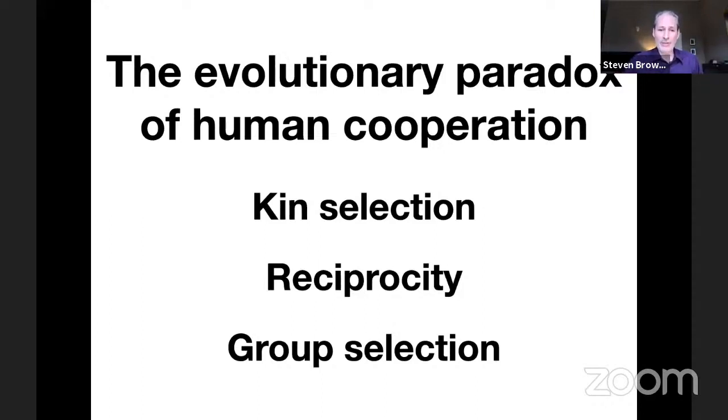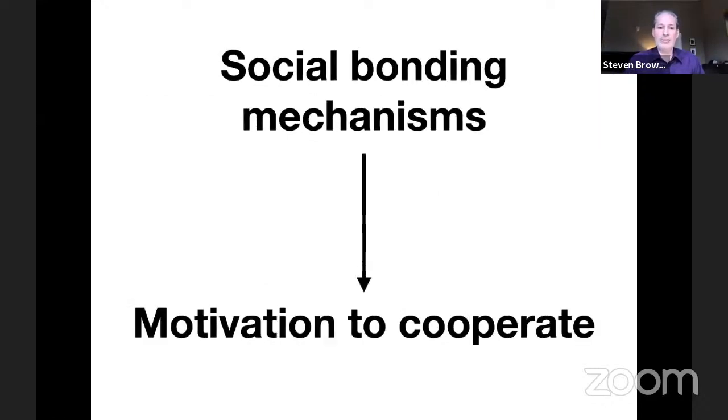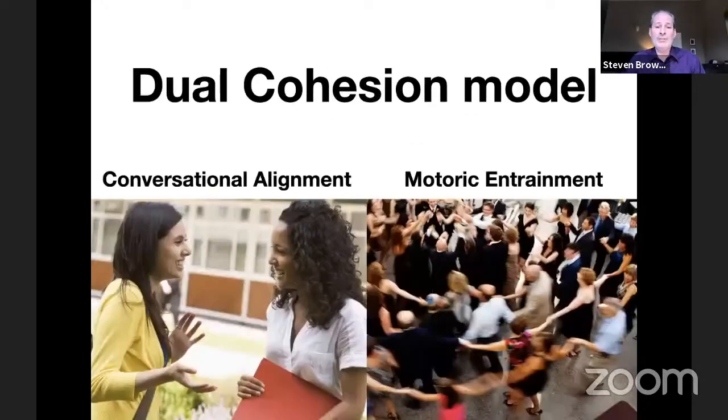I think all these mechanisms are definitely operative and contributing to human cooperation, including cultural ones. But I want to go beyond that and talk about potential social bonding mechanisms that are very important in motivating cooperation beyond simply codes of conduct and social norms. I'm going to talk about what I see as the two major ones—I'm going to call this a dual cohesion model of conversational alignment and motoric entrainment.